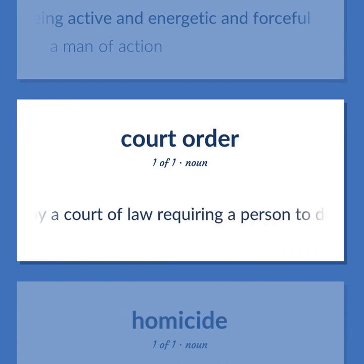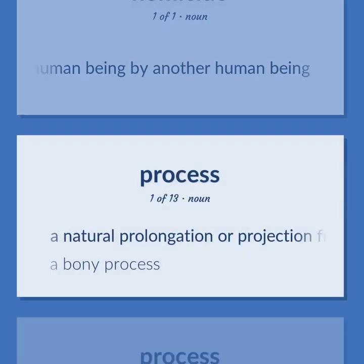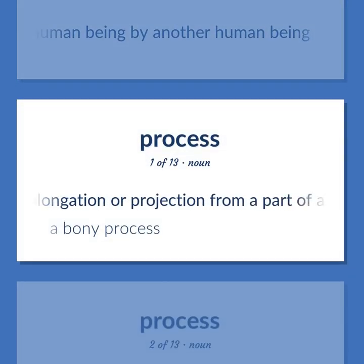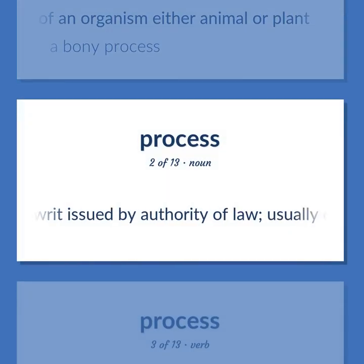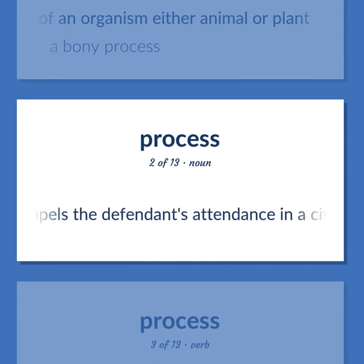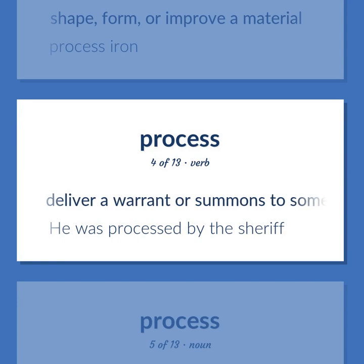A writ issued by a court of law requiring a person to do something or to refrain from doing something. The killing of a human being by another human being. A natural prolongation or projection from a part of an organism, either animal or plant — a bony process. A writ issued by authority of law, usually compelling the defendant's attendance in a civil suit; failure to appear results in a default judgment against the defendant. Shape, form, or improve a material — process iron. Deliver a warrant or summons to someone — he was processed by the sheriff.